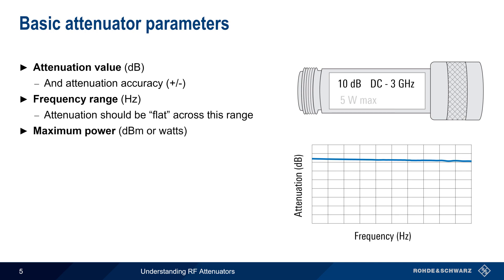Another key attenuator parameter is maximum power, which can be given in dBm, but is more often given in units of watts. The maximum power may be specified for both constant or CW signals, as well as peak power for pulsed or bursty signals.